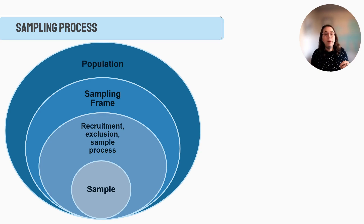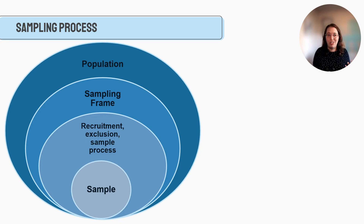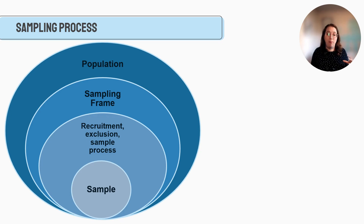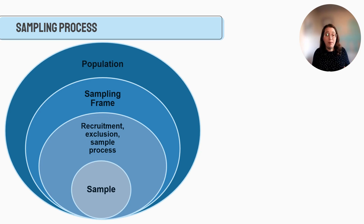Then we think about recruitment — how are we going to recruit our population? We consider exclusion and inclusion criteria: do we only want one gender, one profession, one major? That determines who's in the sample and who's not. At the end we come up with our sample size. The sampling frame might have 10,000 people on it, but we may only end up with a sample of 800, which depending on the sampling process can still be pretty representative.